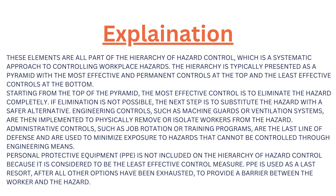Starting from the top of the pyramid, the most effective control is to eliminate the hazard completely. If elimination is not possible, the next step is to substitute the hazard with a safer alternative. Engineering controls, such as machine guards or ventilation systems, are then implemented to physically remove or isolate the worker from the hazard.